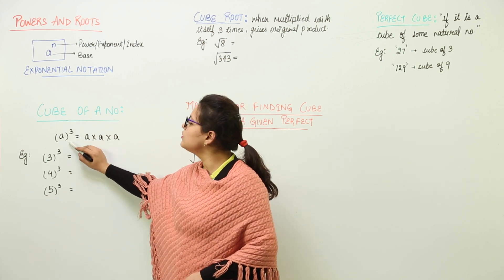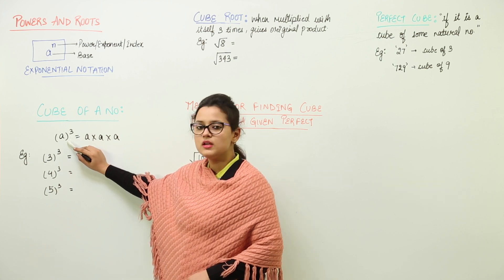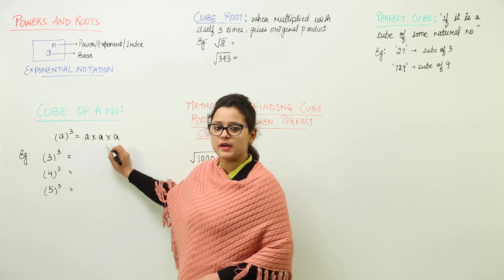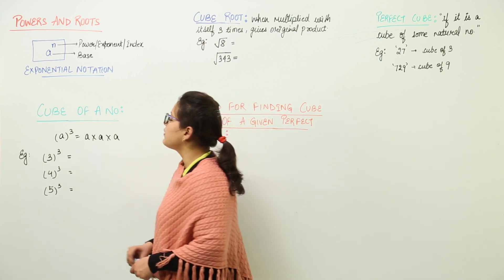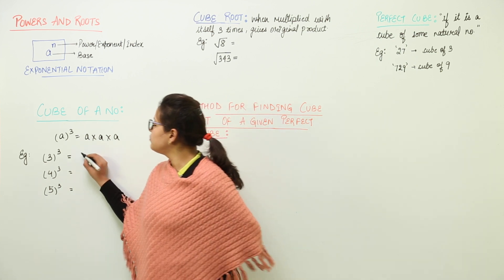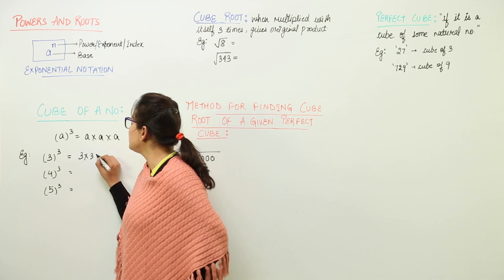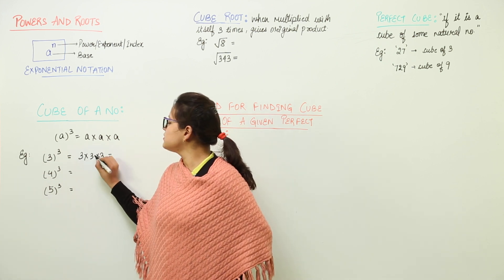For example, here you have to find out the cube of A. That will be A multiplied with A multiplied with A. So for example, we have to find the cube of 3. That would be equal to 3 into 3 into 3. That is 3 times 3 is 9,